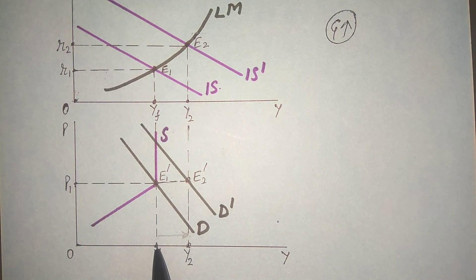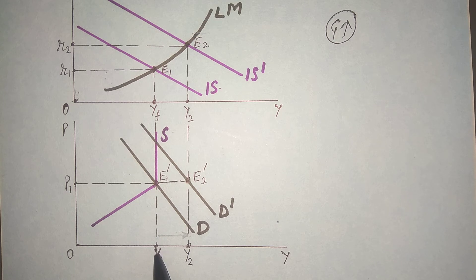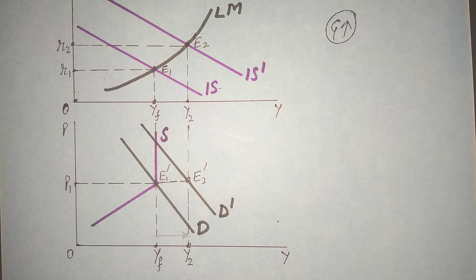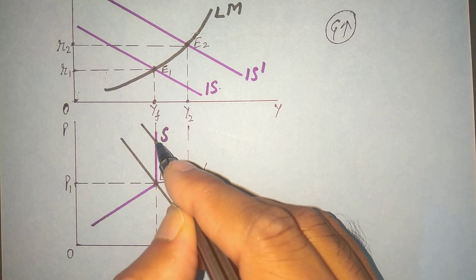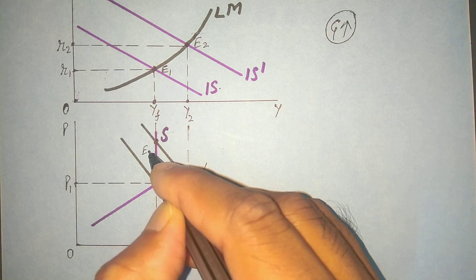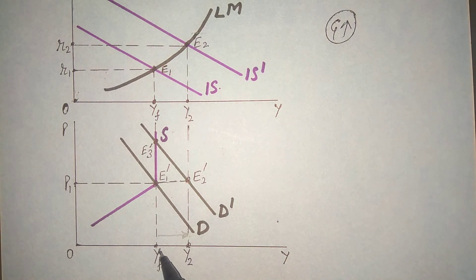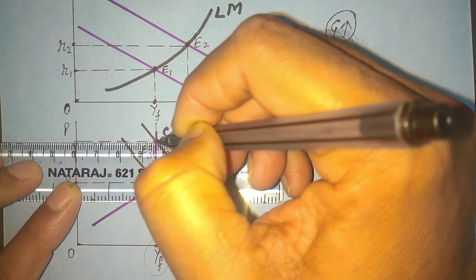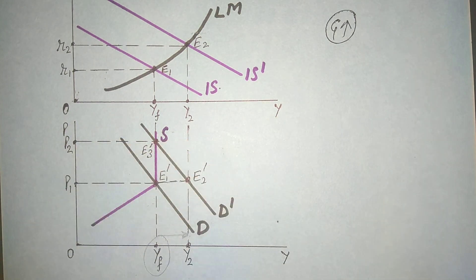But practically we know this cannot happen — output cannot increase beyond Yf because of the level of full employment. So what will happen: if supply is fixed and demand increases, then equilibrium will not form at E2 dash; it will form here at point E3 dash. The output level stays the same because of full employment, so prices increase from P1 to P2. This is what we call demand pull inflation — prices increase because demand increased.